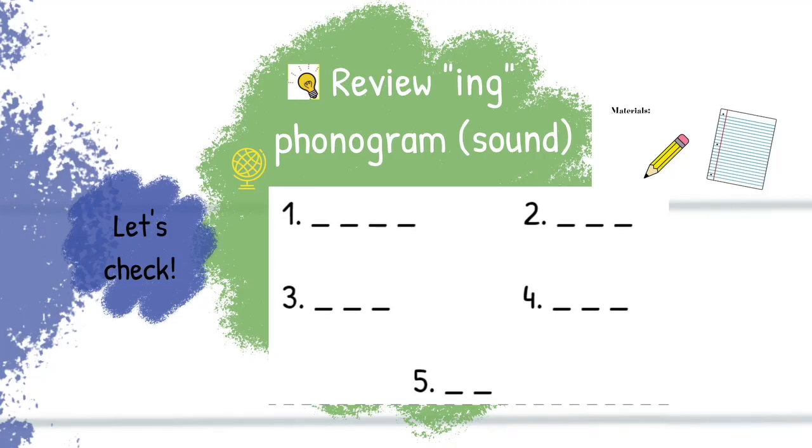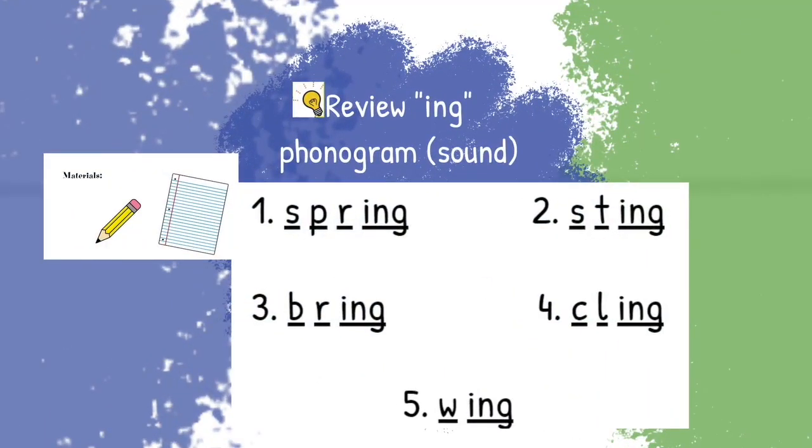Number four, cling. Cling, like the seaweed likes to cling to the boat. C-l-ing. And remember, all of these words have the sound ing in them. And if you notice a pattern, the ing sound is at the end of each of these words. Number five, wing. W-ing. All right, let's check. Here are those words spelled correctly.